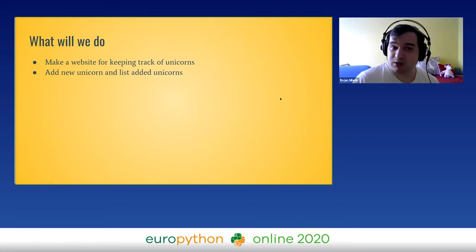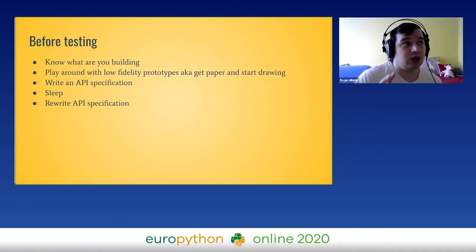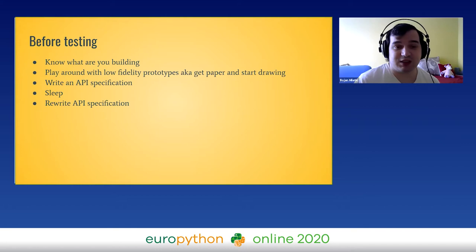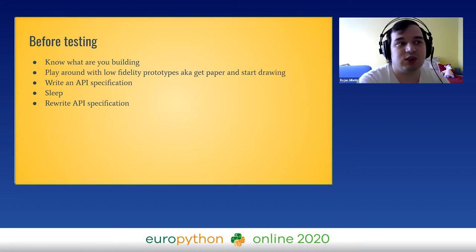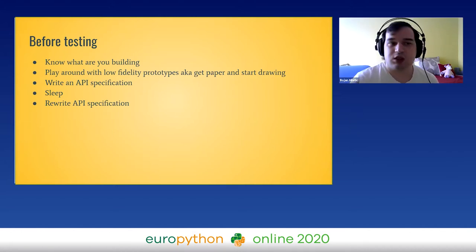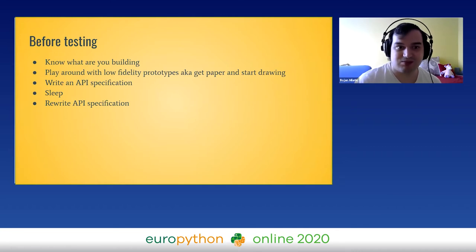For this example, I decided to make a website for keeping track of unicorns. We're going to add a new unicorn and list added unicorns. We're going to focus on basically just one endpoint, and I believe we can generate a huge number of tests for that endpoint. Before testing, one of the good practices is that you know what you're building. When you're doing a project on your own, take more time before jumping into the code — it can save you quite a lot of time.